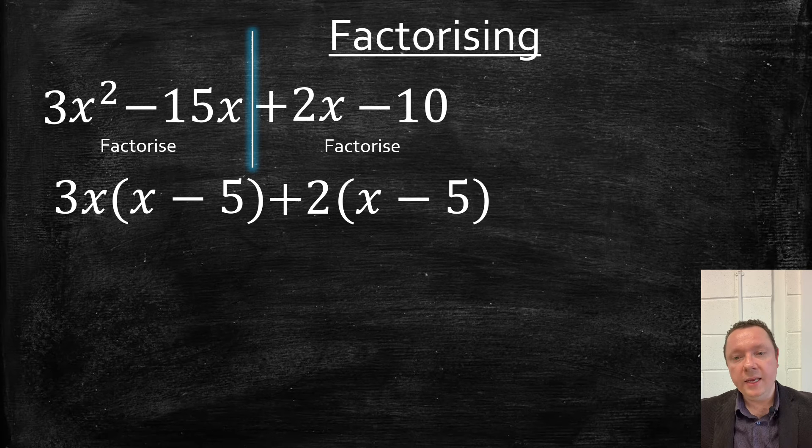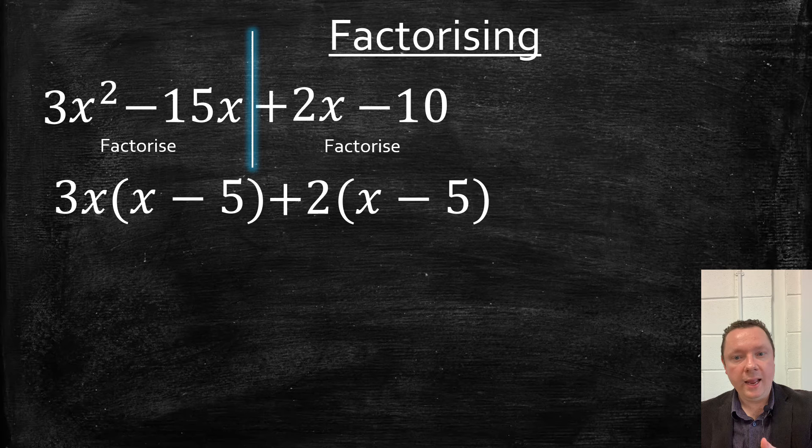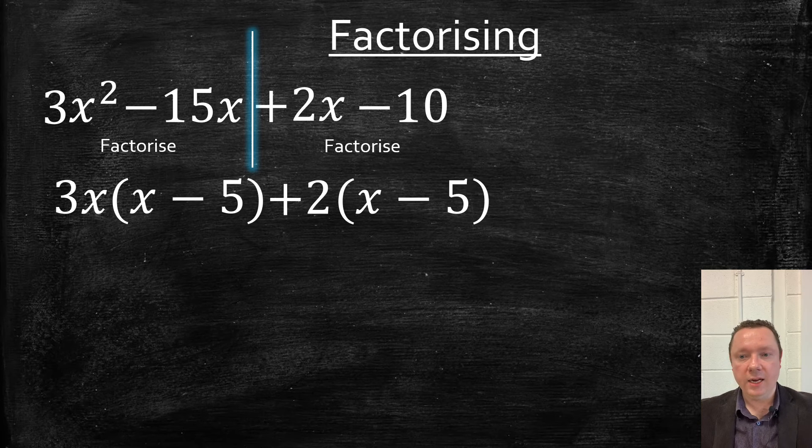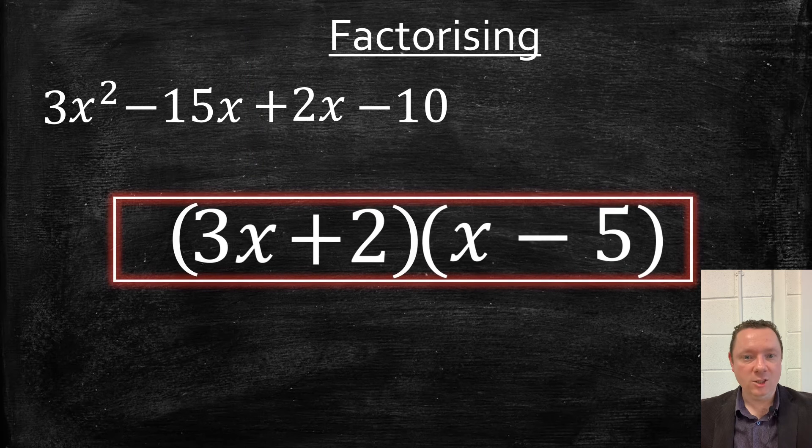Our answer is going to be, what's outside the brackets? 3x add 2, and then the next one, x minus 5, is our second bracket. In other words, 3x plus 2 and x minus 5.